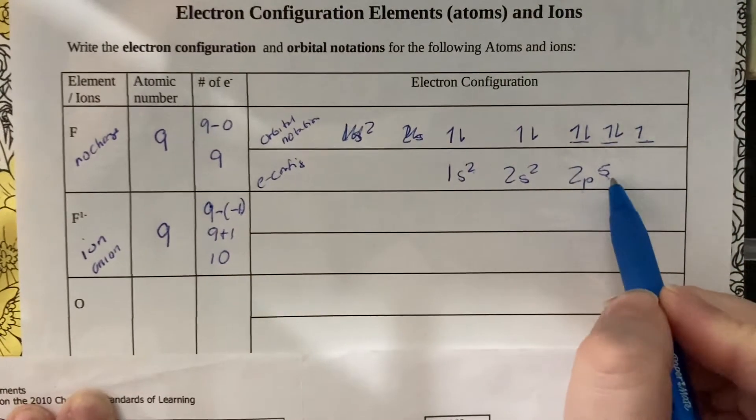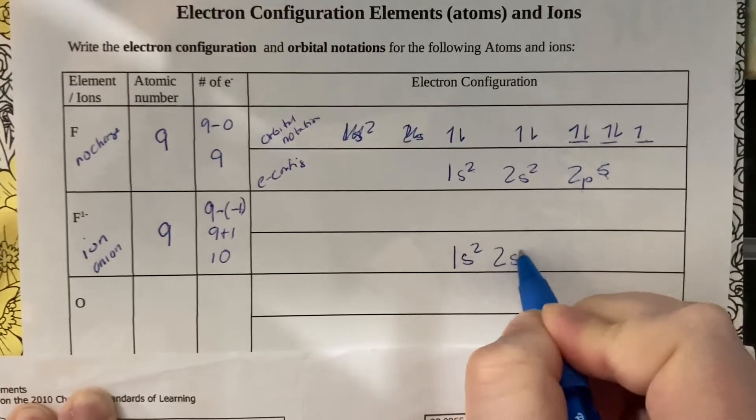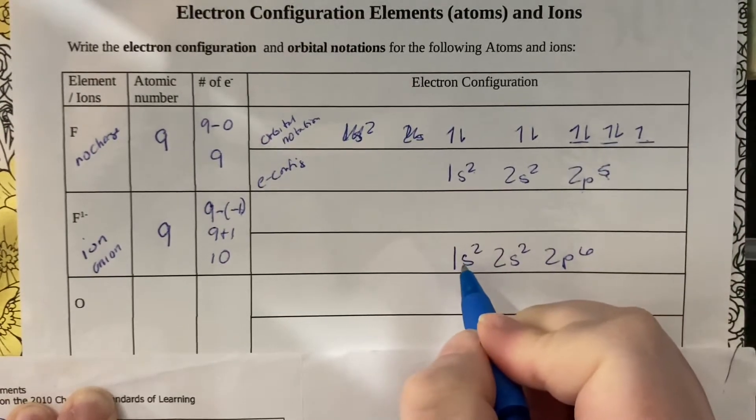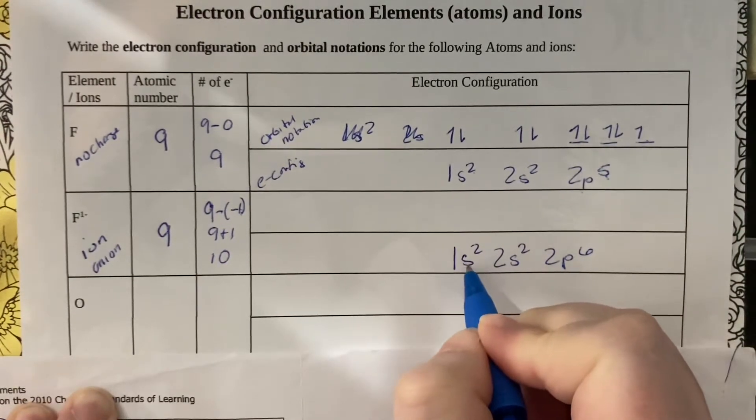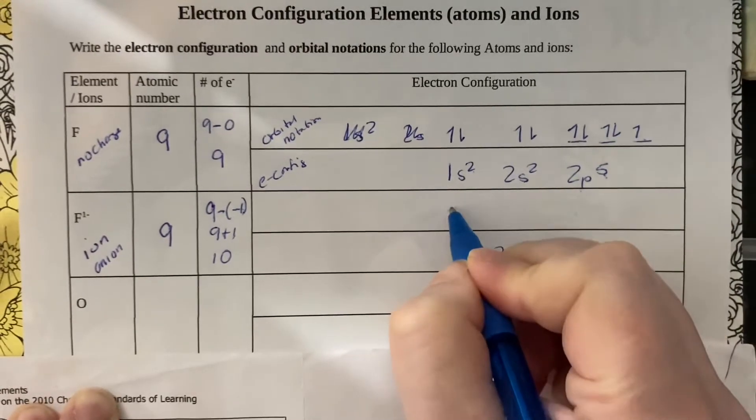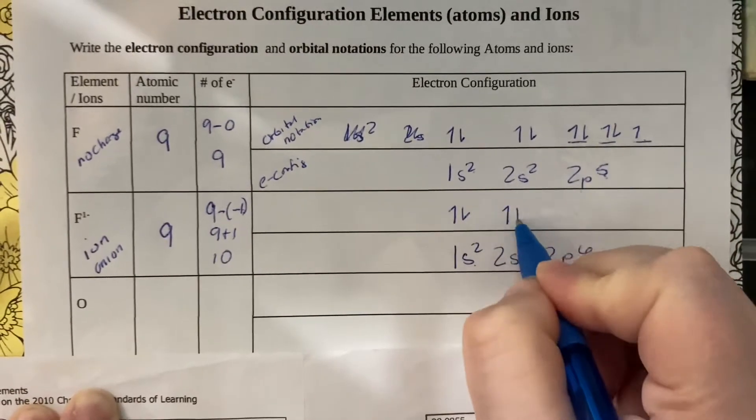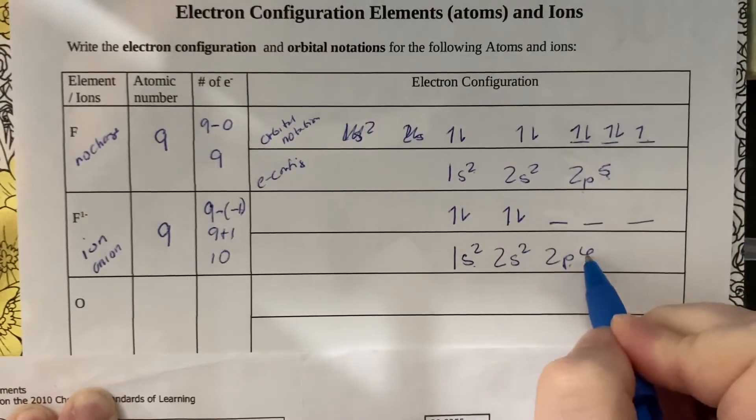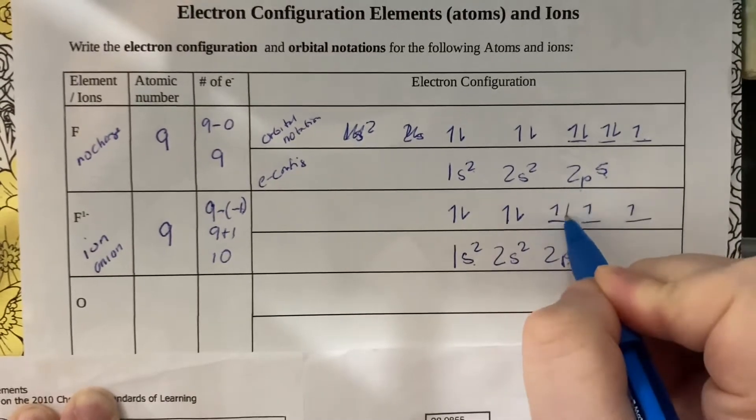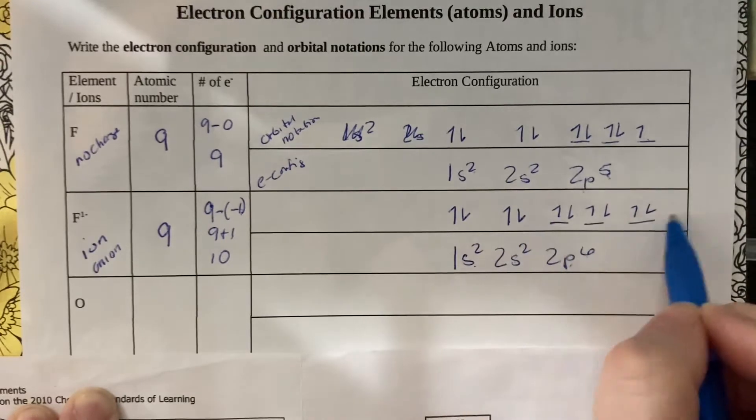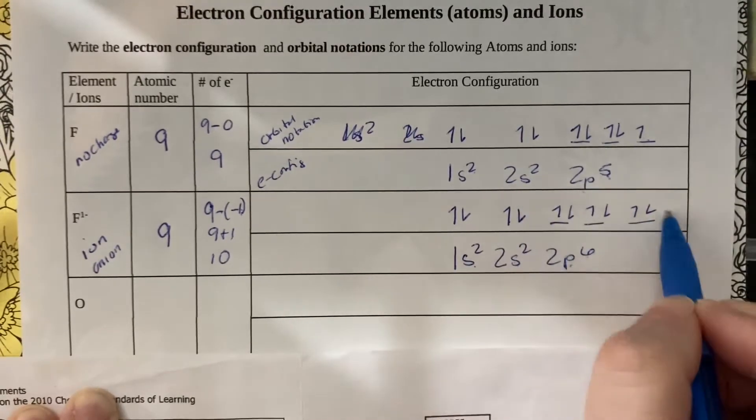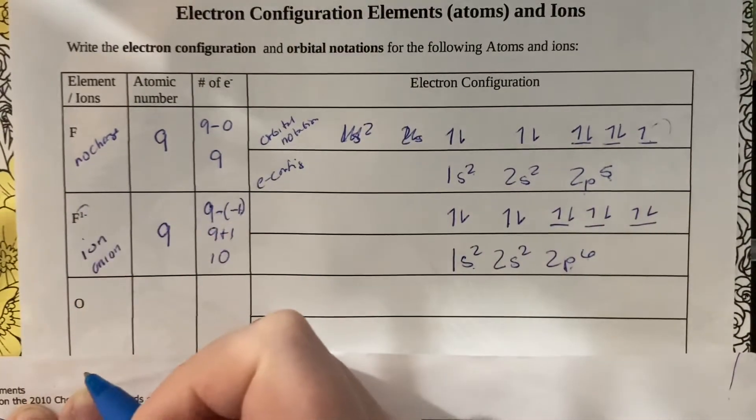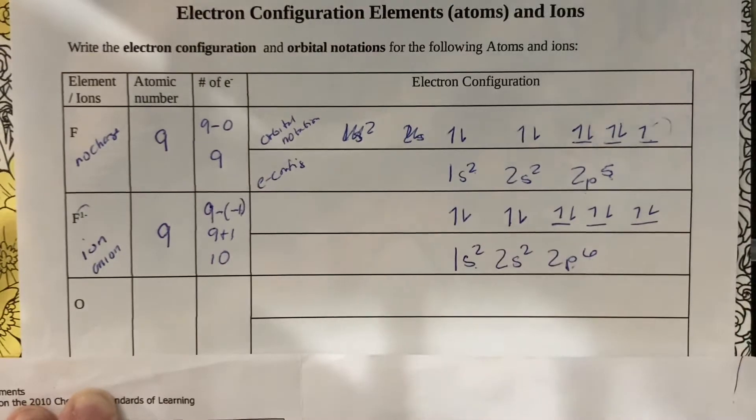So everything is the same except we have one more electron, so we just have to add one electron to the last spot: 1s² 2s² 2p⁶. My orbital notation is very similar except for that last orbital. The s gets one up one down, p I break into three and there's six total: up up up down down down. This shows us that he is now full, so he's like a noble gas. He's short one, so he gets a minus one charge to then be like a noble gas.